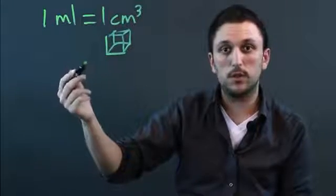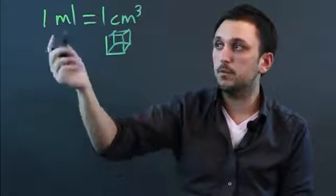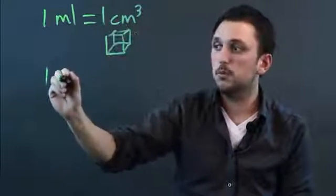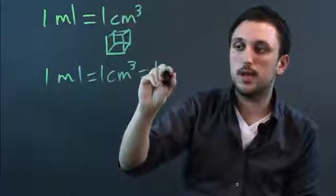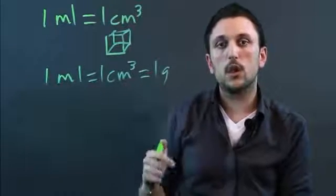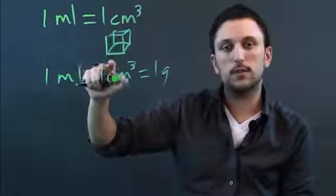The general conversion with the metric system is this is for water. So one milliliter equals one centimeter cubed which equals one gram of water. Otherwise the conversion is not the same.